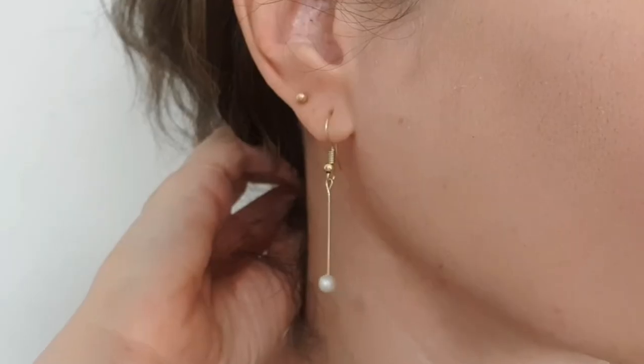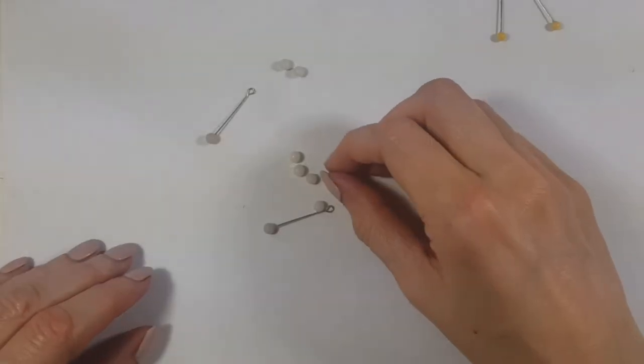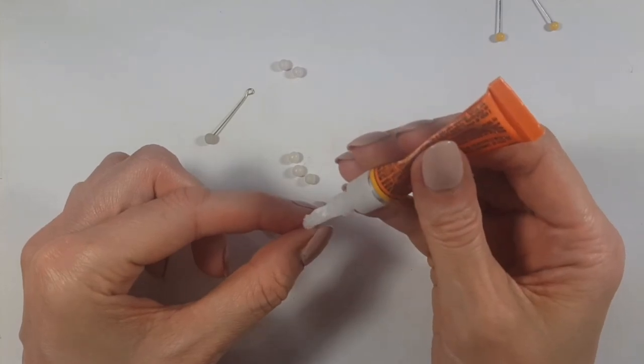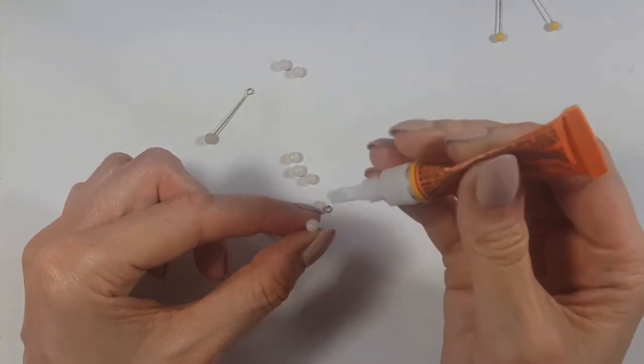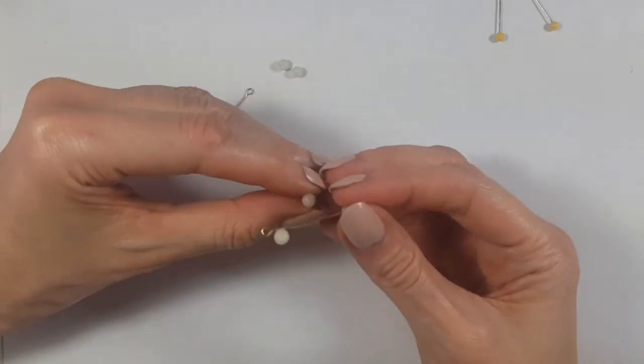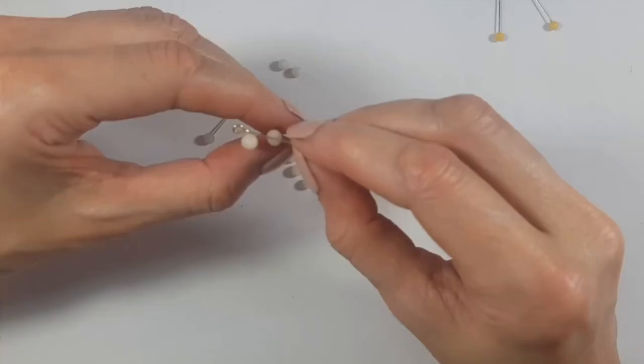Now for the multiple pearls, I'm going to be doing pretty much the same but I'm going to be making more spheres, a lot more. Letting them dry and then I'm going to be gluing them around my eye pin. For this I would highly suggest you to get a really good glue. The one that I use, Gorilla Super Glue, works really well for these kinds of projects.